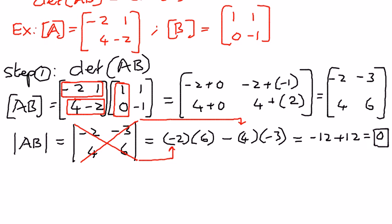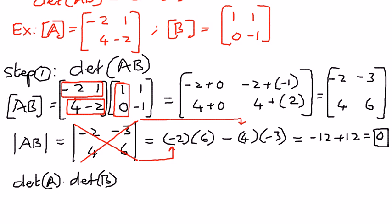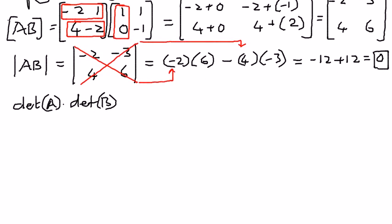We found the determinant of AB equals 0. Next, we're going to do the right-hand side, which tells us determinant of A times determinant of B. We'll find out whether that product also goes to 0. To do that, we'll first find the determinant of A, and then we'll find the determinant of B.